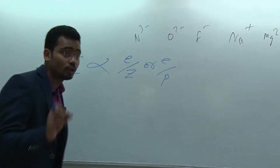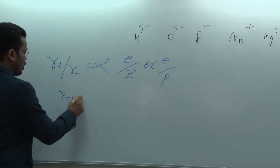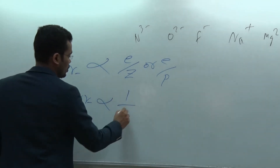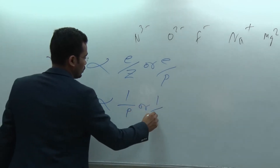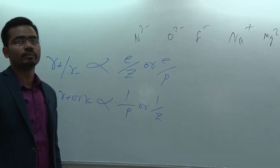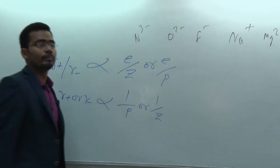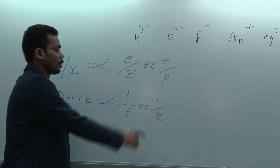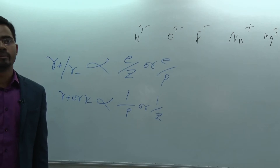For isoelectronic species, r-cation or r-anion will be inversely proportional to only the proton number, or atomic number Z. Because electrons are the same, the electron count becomes constant, so radius is inversely proportional to atomic number Z.